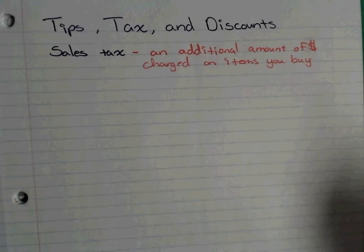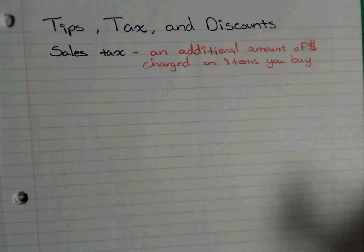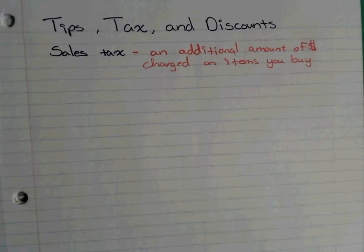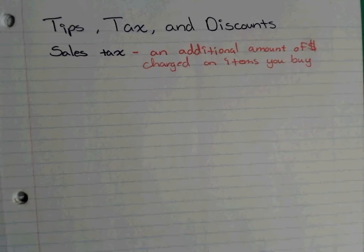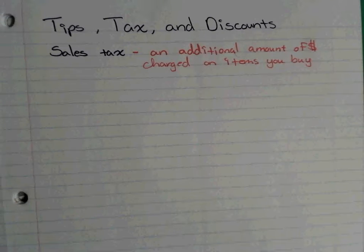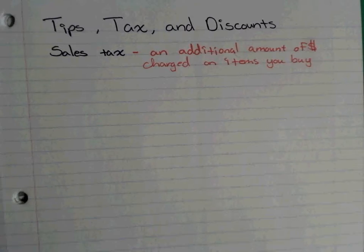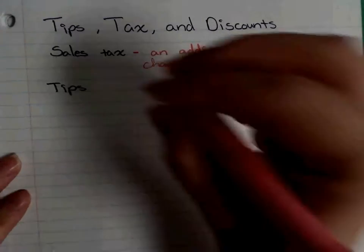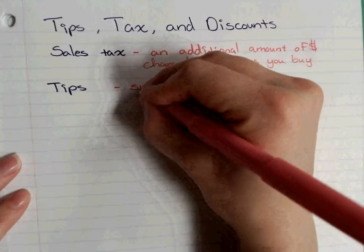That's also why if you donate stuff to Salvation Army or Goodwill, they give you a pamphlet to fill out so you can claim it on your taxes. At the end of the year when filing with the IRS, you can state what you donated and what it was worth, and the government will give you some tax back.